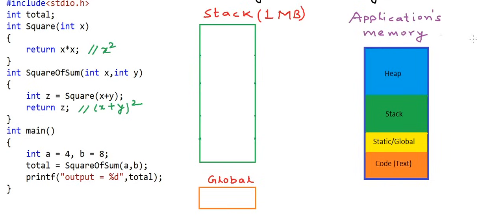That is a dangerous thing and we need to be really careful about using heap for this reason. We also sometimes call heap a free pool of memory or free store of memory. We can get as much as we want from the heap. Heap is also called dynamic memory, and using the heap is referred to as dynamic memory allocation.